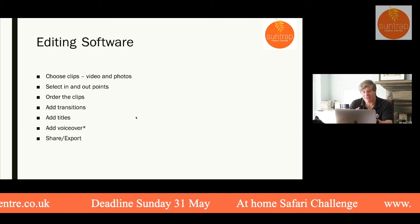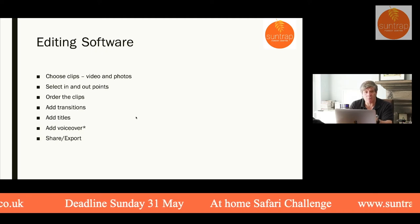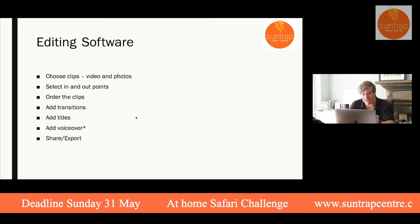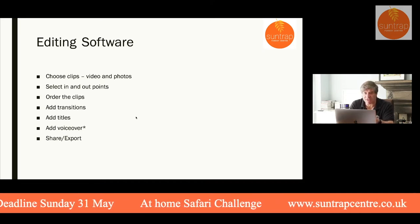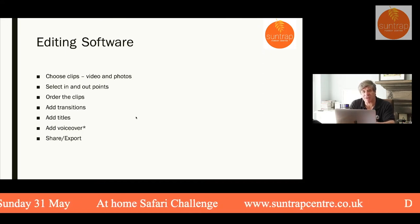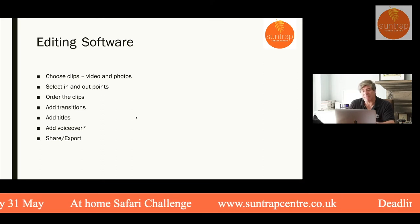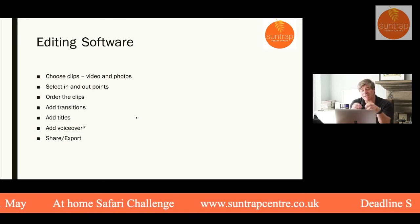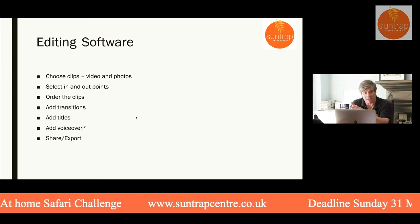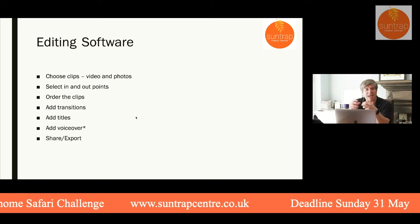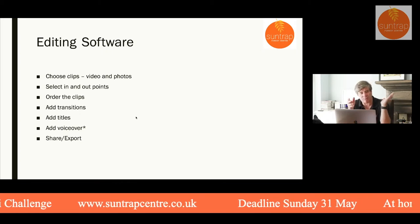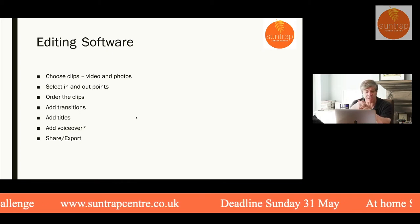The thing about using editing software is you want to be able to order your clips. You choose the beginning and end of each clip, pop it in, and then you can move them around. You can change it later — make it longer, shorter, or even get rid of a clip. You may have noticed that sometimes in films clips just cut straight from one to another, but other times they have transitions — dissolves, or wipes where you see it slide across the screen.